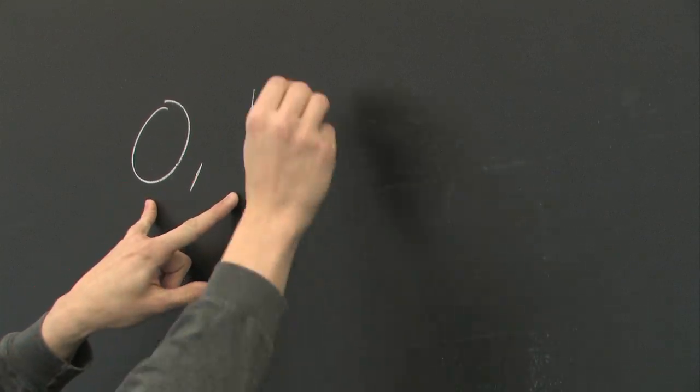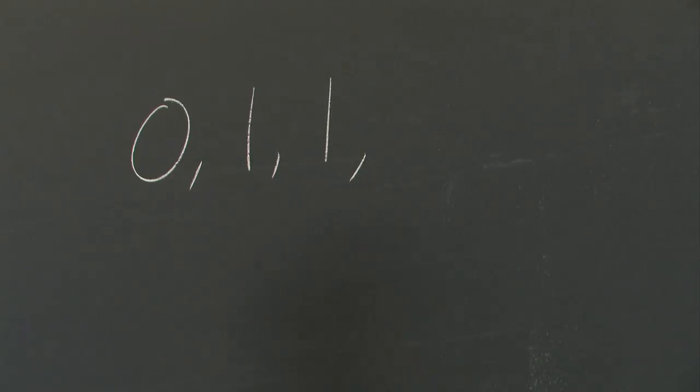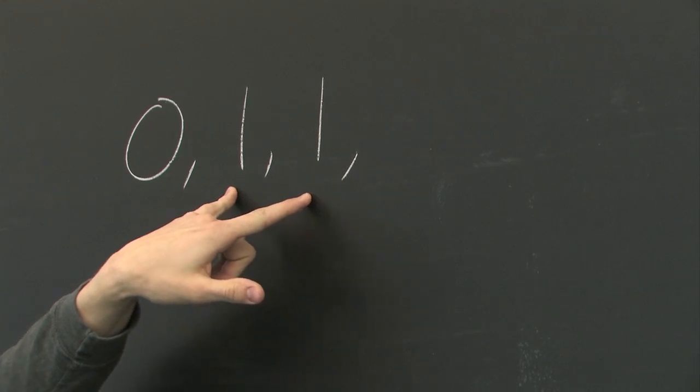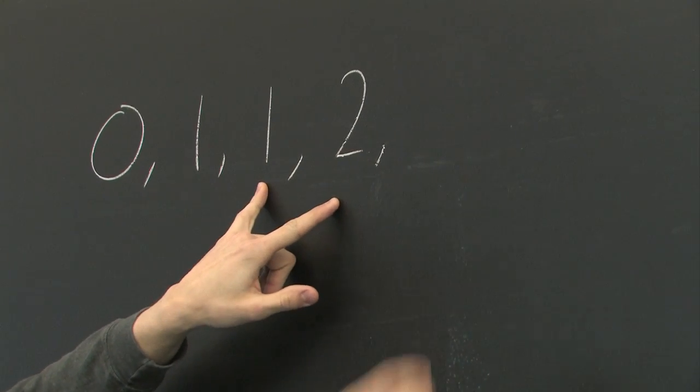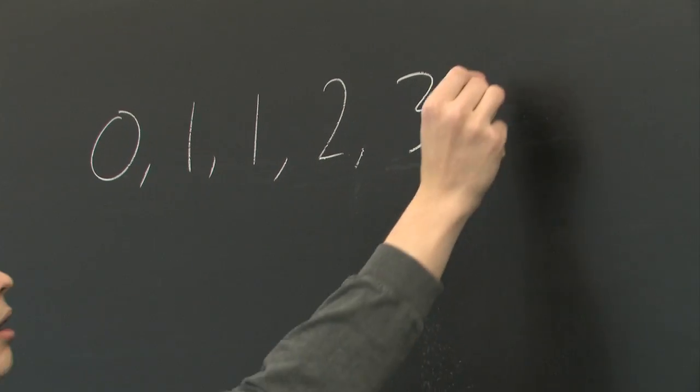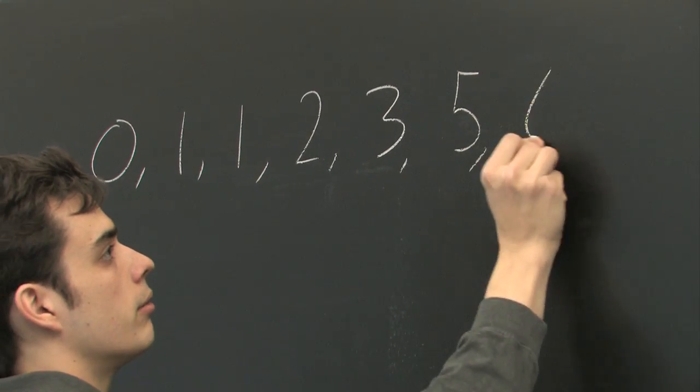So 1 plus 0 is 1, 1 plus 1 is 2, 1 plus 2 is 3, and so on and so forth.